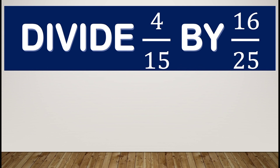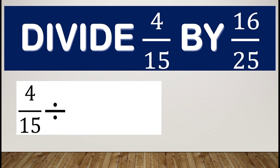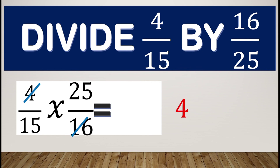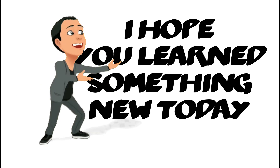Now divide four-fifteenths by sixteen over twenty-five using cancellation. We get the reciprocal and have four-fifteenths times twenty-five over sixteen. Four and sixteen are divisible by four — four divided by four is one, sixteen divided by four is four. Twenty-five and fifteen are divisible by five — twenty-five divided by five is five, fifteen divided by five is three. Our new equation is one-third times five-fourths, giving us five over twelve. I hope you learned something new today. Thank you for watching!